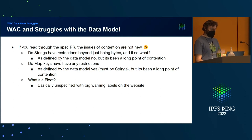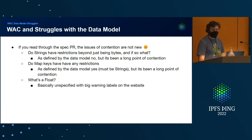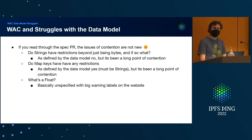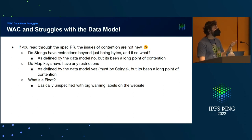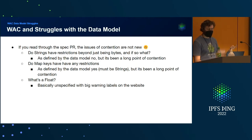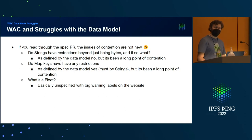Strings: are they bytes? Are they UTF-8? Are they Unicode? The data model currently says they're just bytes, and we hope you make them nice strings. Moe poked at this earlier, noting that the data model has these strings which aren't always nice things you can put into a URL — you might need to escape them — and proposed an IPLD URI scheme that has escaping. Related to the strings question: do map keys have restrictions? The data model says they've got to be strings, and that's been the point of contention.